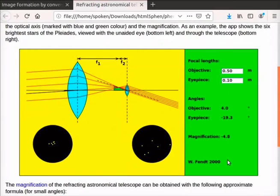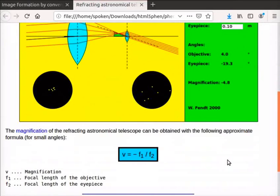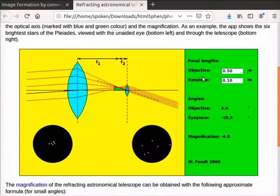At the bottom of the screen, app has given the formula for magnification. That is, v equals to minus f1 upon f2. Here, v is the magnification, f1 is the focal length of objective and f2 is the focal length of eyepiece. Let us calculate the magnification using the formula.